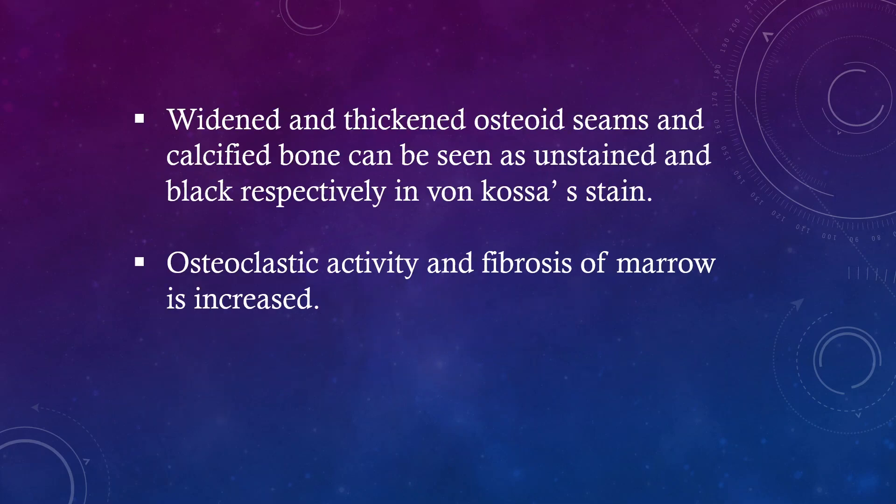Widened and thickened osteoid seams and calcified bone can be seen as unstained and black respectively in von Kossa stain. Osteoclastic activity and fibrosis of marrow is increased.